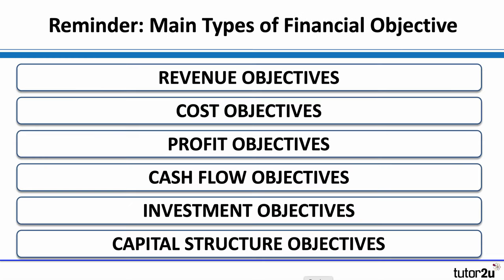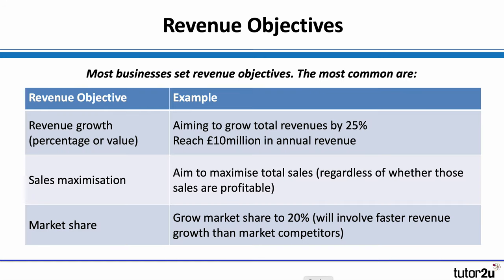Now we'll spend a moment going through each of the main types of financial objective. As mentioned, they are more than just revenue and profit objectives — they can also involve cash flow and capital structure. Feel free to pause the video to jot down some examples as we go through, starting with revenue objectives.